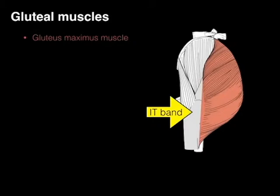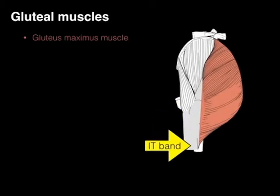In a lateral view, shown in gray is the IT band, and it courses down to the proximal part of the tibia on its lateral side.